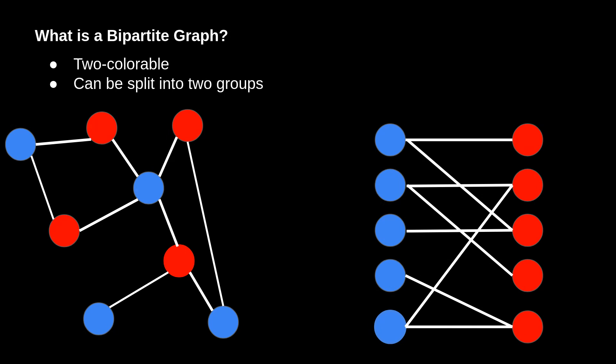A graph is two-colorable if, for every edge in the undirected graph, we can color the nodes such that for each edge, the two nodes it connects are different colors. If you look at the graph on the left and look at every edge, you'll see that it always spans a red node and a blue node. There is no edge that goes between two red nodes or two blue nodes. A graph is two-colorable if it is possible to color the nodes in some arbitrary way such that this property holds.